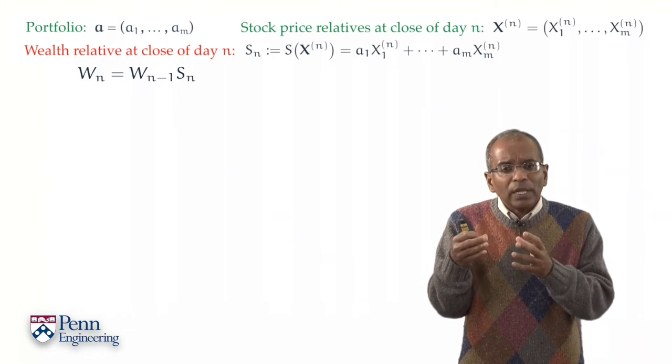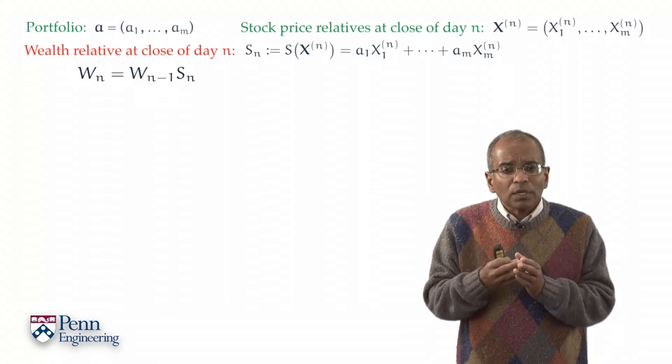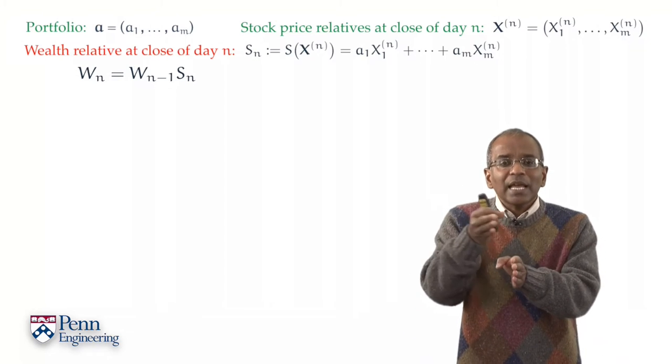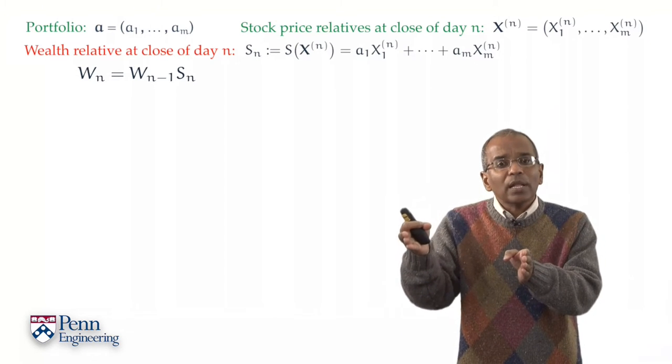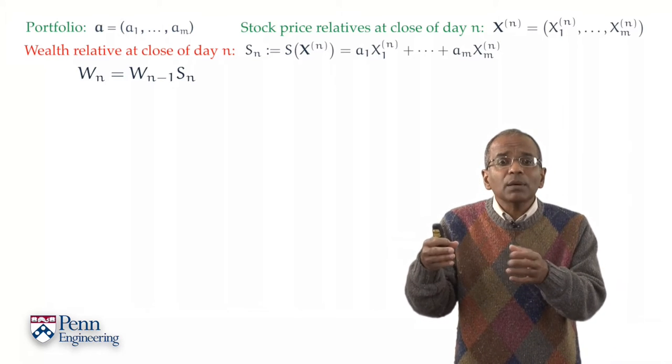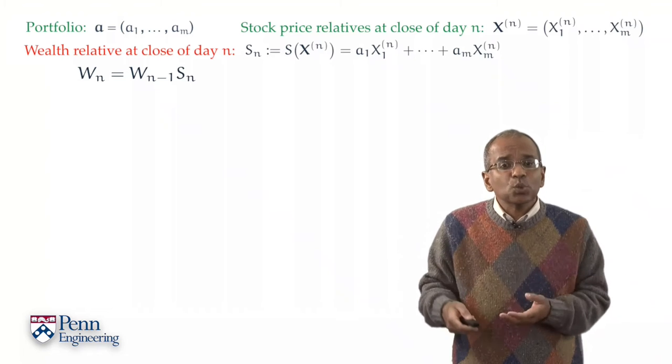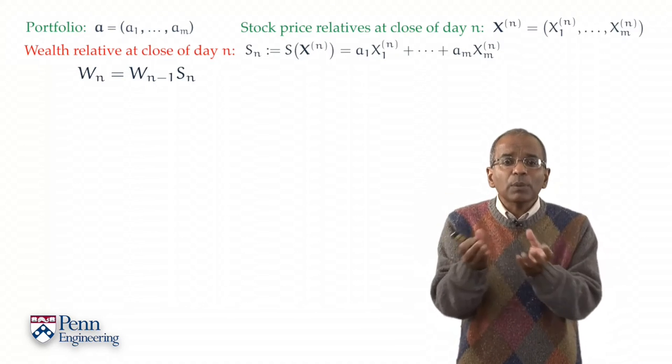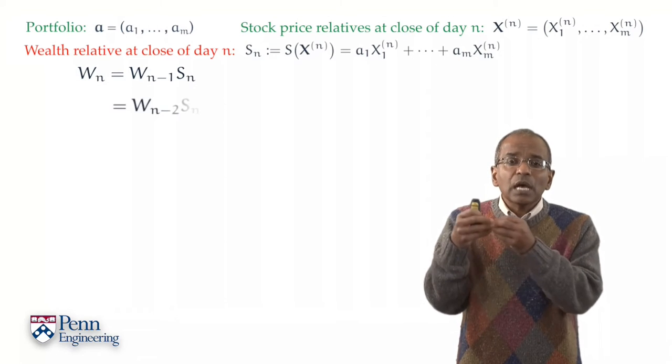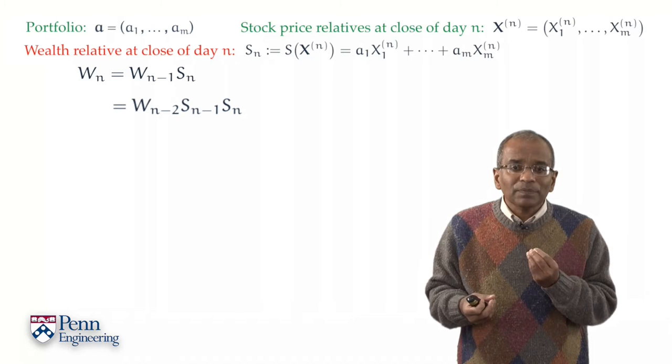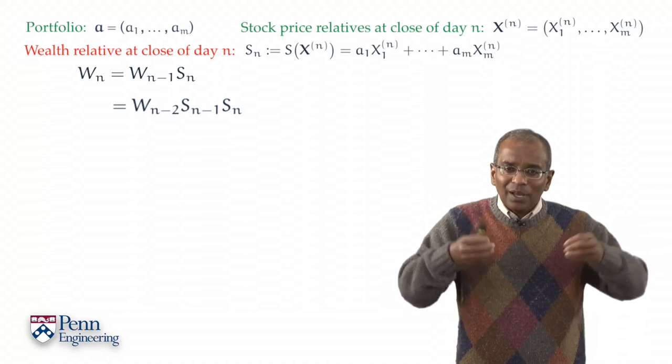What can we say about the wealth at the close of trading on day n minus 1? Well, of course the same recursive equation tells us it is related to the wealth at the close of trading on day n minus 2, modulated by the wealth relative for day n minus 1. In other words, we can decompose W_{n-1} into W_{n-2} times S_{n-1}.